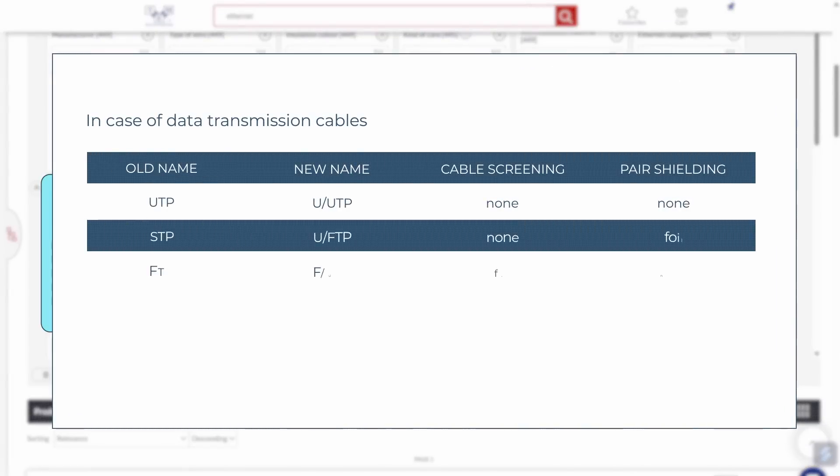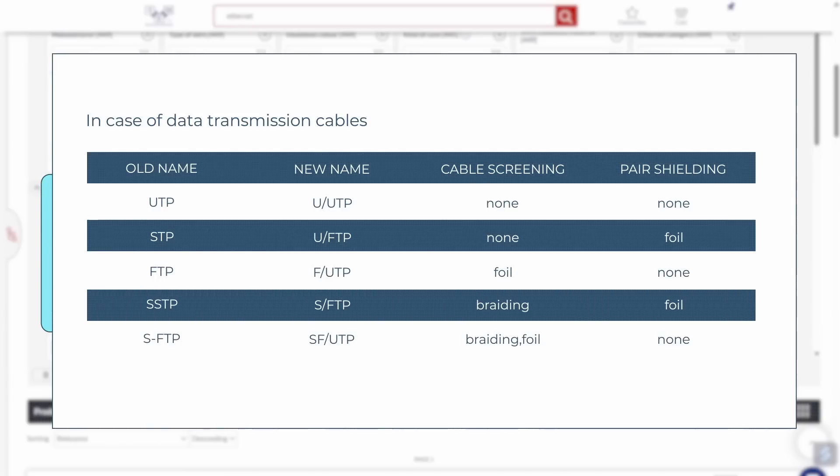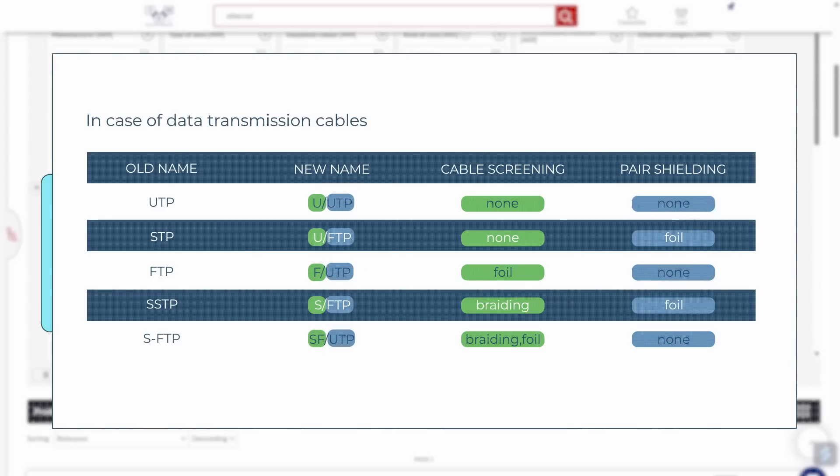The first letter refers to the cable shielding. It can be without any shielding, braided, foiled or both. The next three letters refer to the twisted pair shielding, unshielded or shielded.